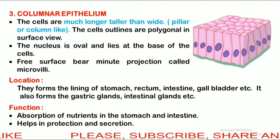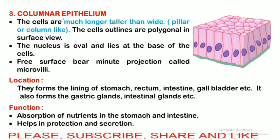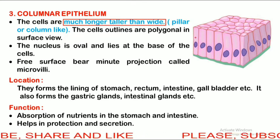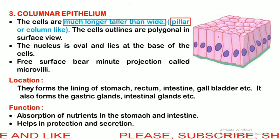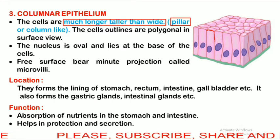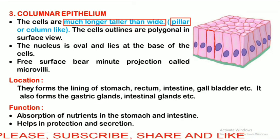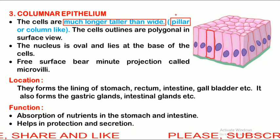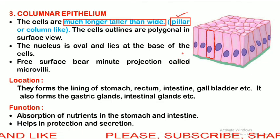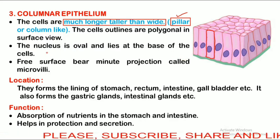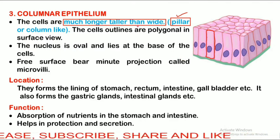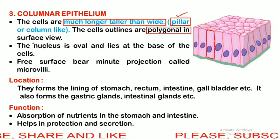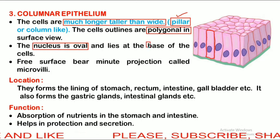Next is the columnar epithelium. The cells are much longer — taller than wide. They are pillar-like. Here you can see that the height of the cell is much greater than the width, so they appear pillar-like or column-shaped, which is why they are known as columnar epithelium. From the surface view they appear polygonal in shape. The nucleus is oval and present at the base of the cell.